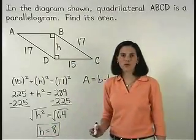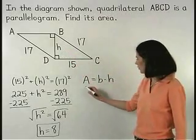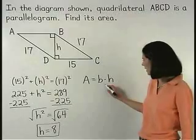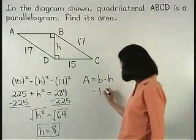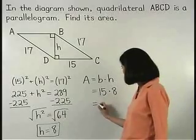So the height of the parallelogram is 8, which means that the area of the parallelogram, base times height, is 15 times 8, which equals 120.